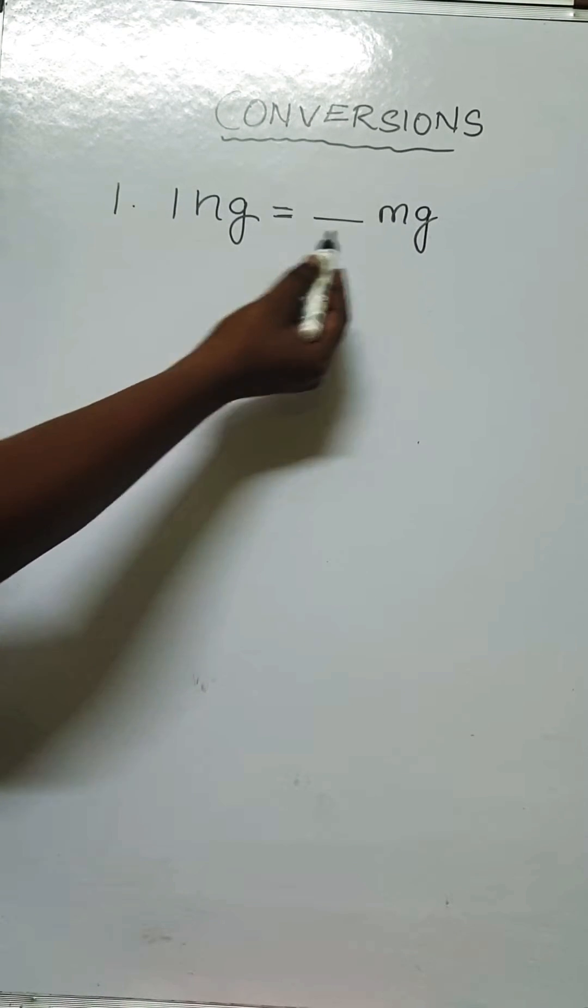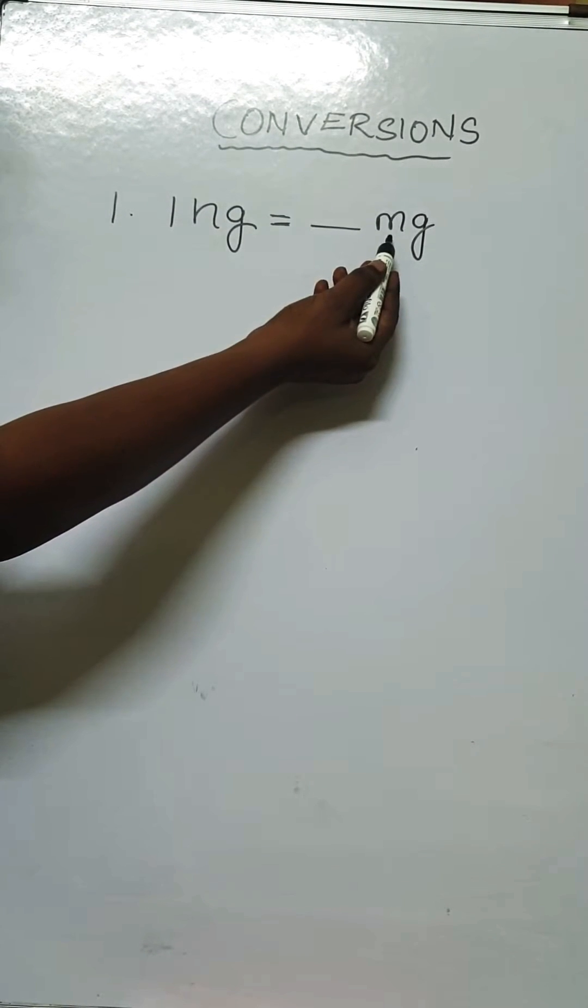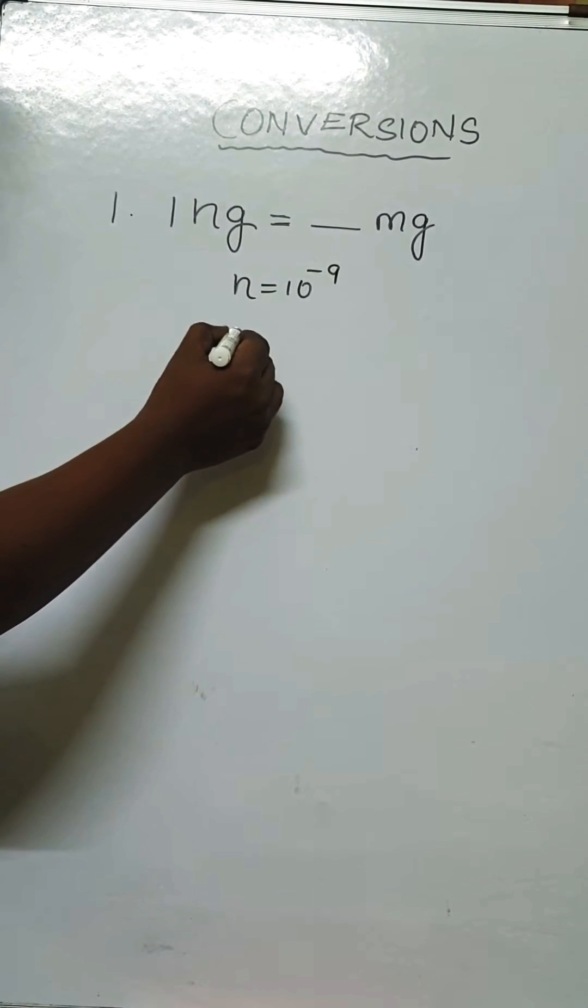Okay, the question is: one nanogram is equal to how many milligrams? You should know that nano is a submultiple of 10, and milli is also a submultiple of 10. Nano is equal to 10 power minus 9, milli is equal to 10 power minus 3.